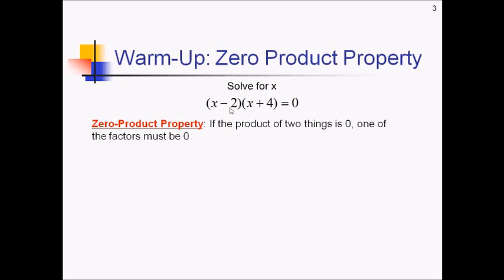So that means that either x minus 2 has to be zero, or x plus 4 has to be zero. They can't both be zero at the same time, but just one of them needs to be zero to make this equation true.